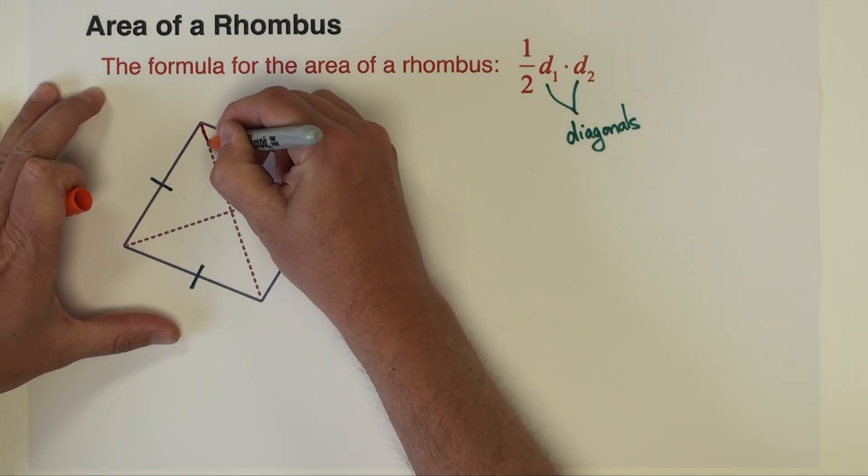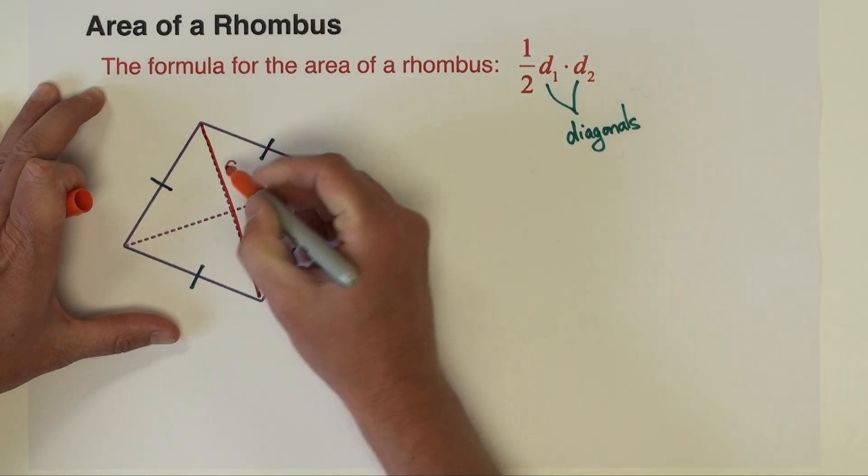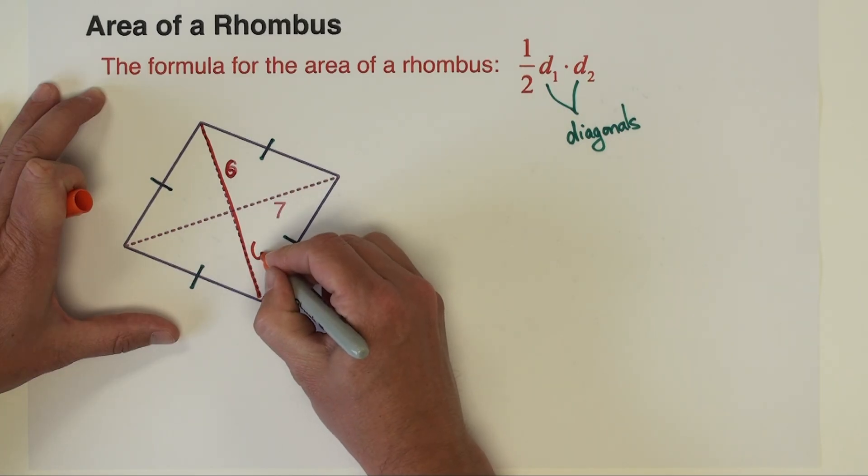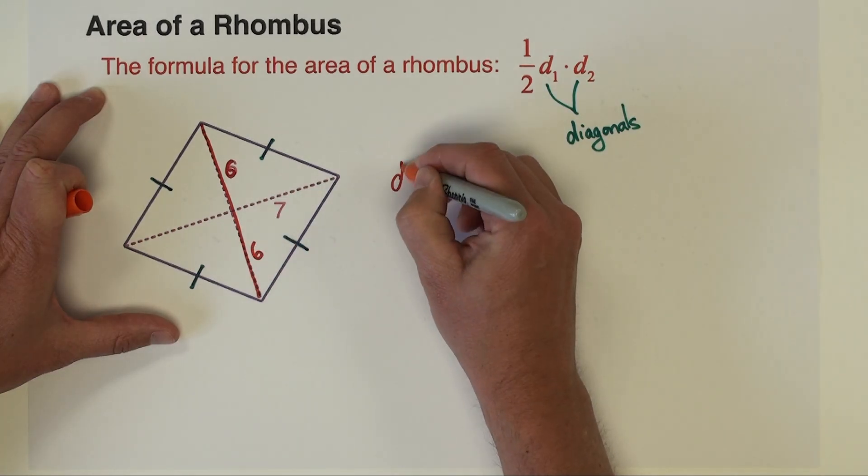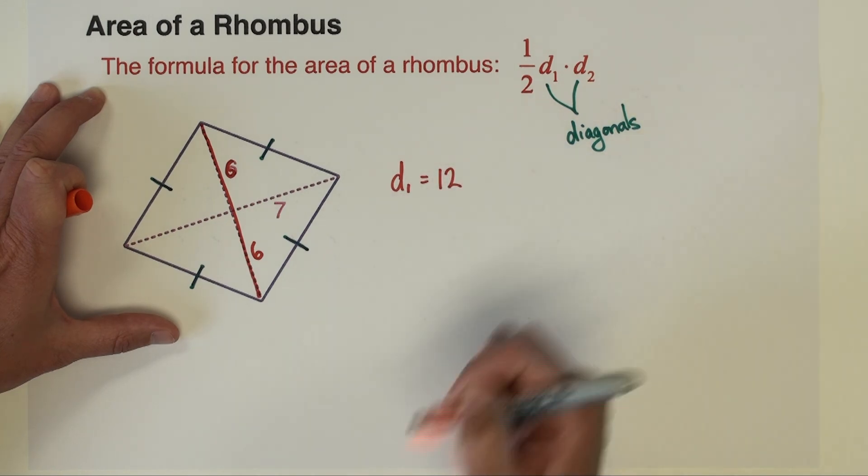So this diagonal here, I don't have the whole length. I have part of the length. This part is six, which means this part down here is six. So one of our diagonals has a length of 12.